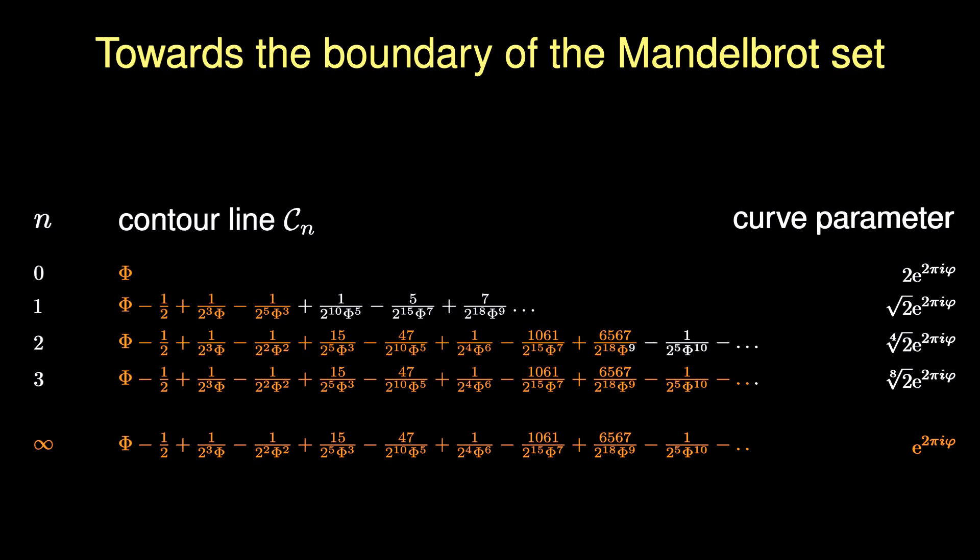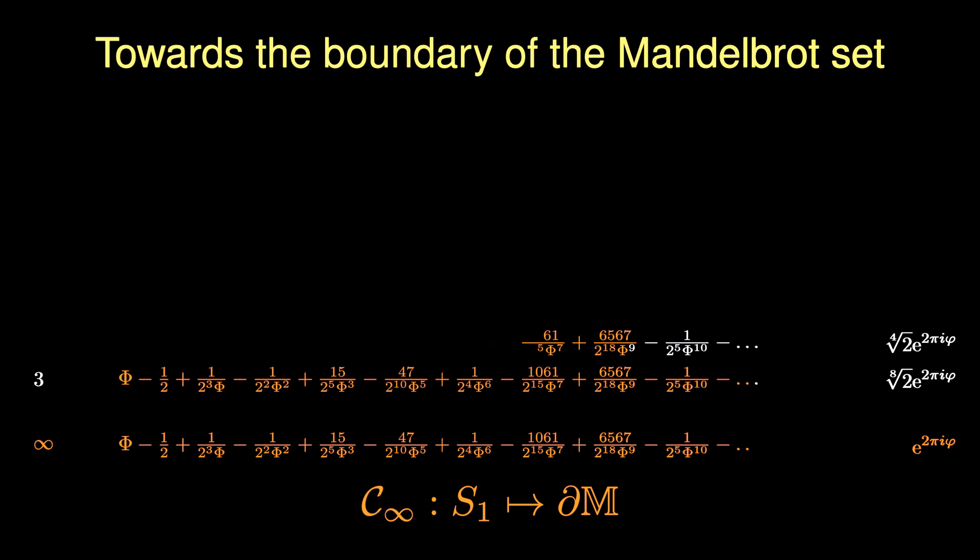Additionally, you can also observe that the radius of the parameterizing circle converges to the unit circle. Hence, the last line can be perceived as a map from the unit circle to the boundary of the Mandelbrot set. This introduces a new scheme of approximation.